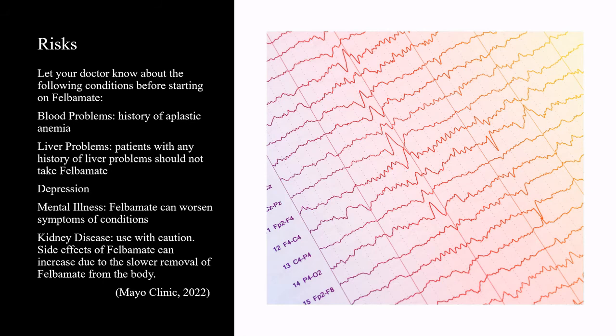Let your doctor know about the following conditions before starting on felbamate: blood problems or any history of aplastic anemia; liver problems — patients with any history of liver problems should not take felbamate; depression; mental illness — felbamate can worsen symptoms of these conditions; and kidney disease — use with caution, as side effects of felbamate can increase due to the slower removal of felbamate from the body.